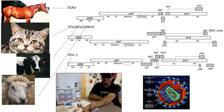HIV is a lentivirus on the basis of its genome and life cycle. It's not all that unusual for the lentiviruses. It infects immune cells, primarily CD4 positive T cells and macrophages. The other lentiviruses pursue similar, if slightly different, life cycles.